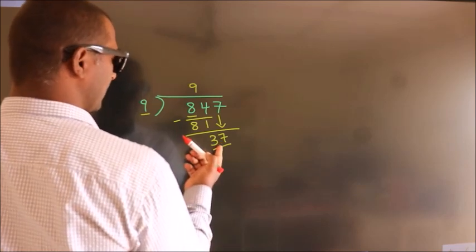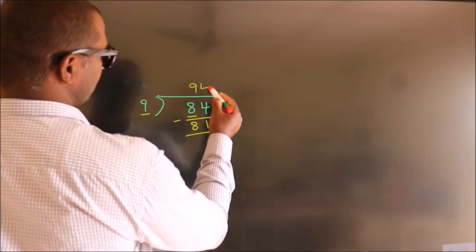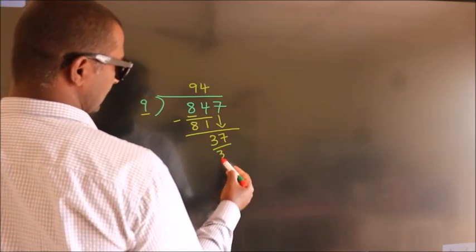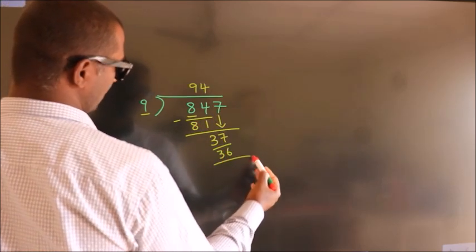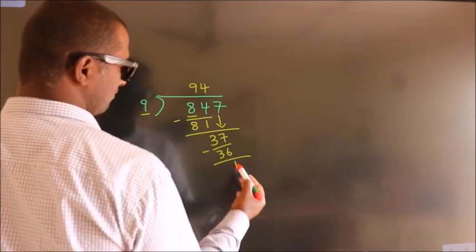A number close to 37 in the 9 table is 9 times 4 equals 36. Now we subtract, we get 1.